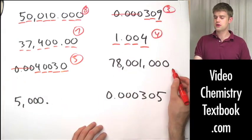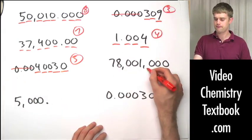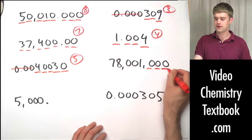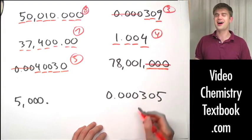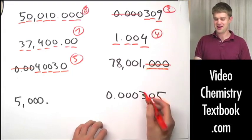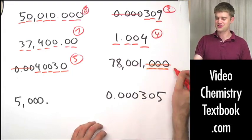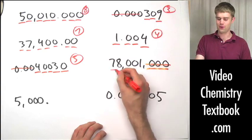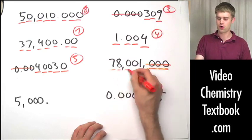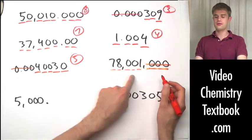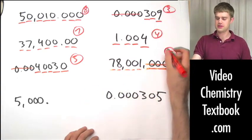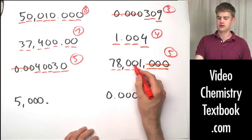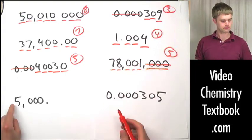Here we have some zeros to the right. They are not significant because there's no decimal point in this number. So there are only five significant figures here — the non-zero digits plus the zeros that are sandwiched in between, which are significant.